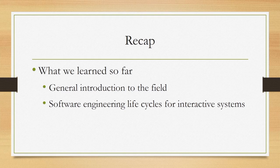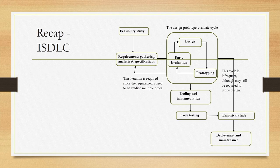Essentially what we mentioned is that there has to be a systematic and stage-wise process to develop an interactive system. This systematic development process is referred to as the software development life cycle. We have seen one such life cycle tailored to the development of usable interactive systems. Let us quickly recap this development life cycle.